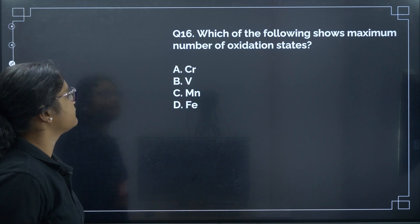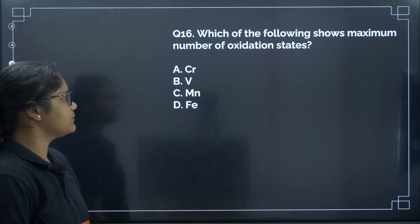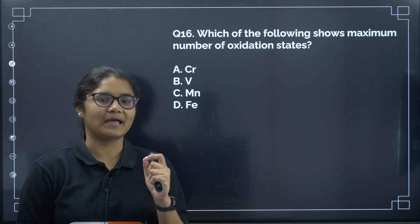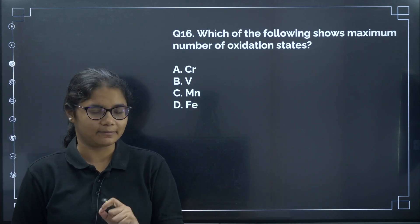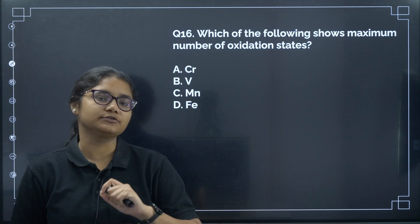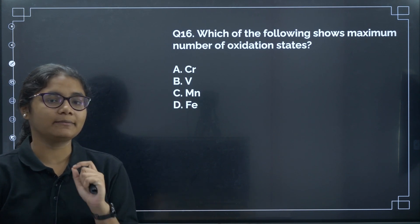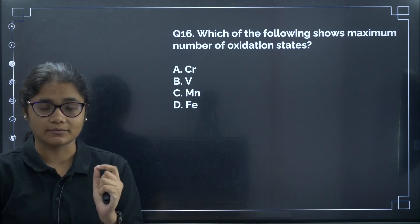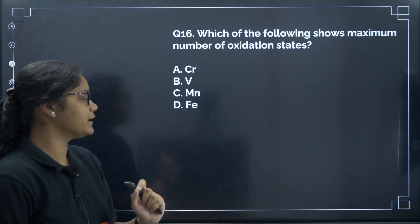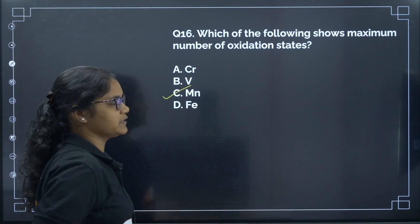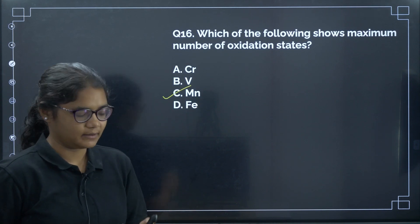Question 16: Which element shows the maximum number of oxidation states? Manganese is the element which can show the maximum number of oxidation states because it has the maximum number of unpaired electrons. The correct answer is option C.